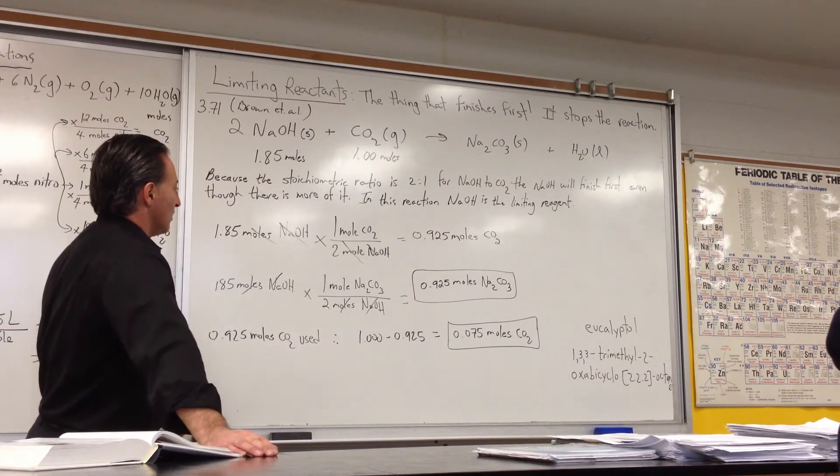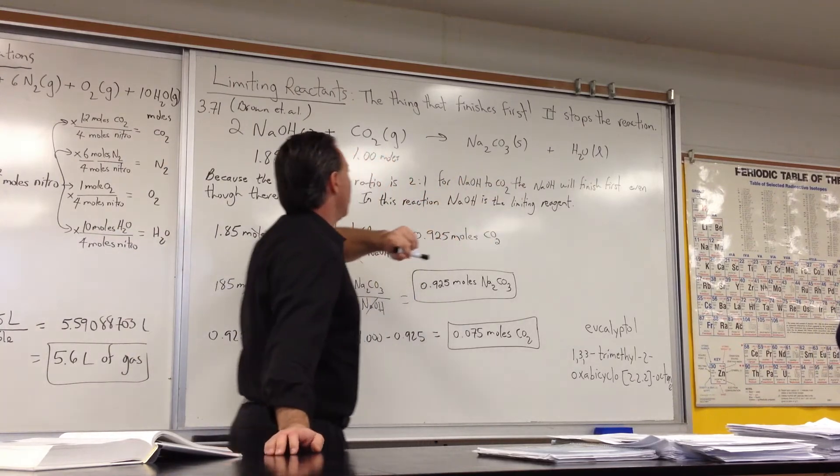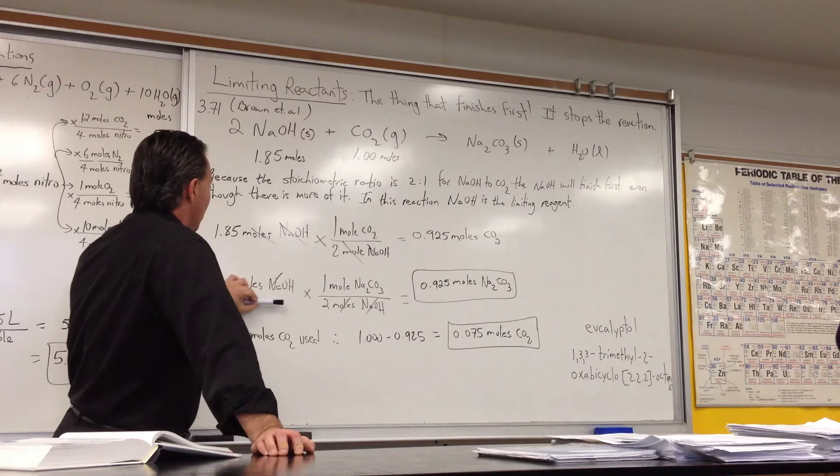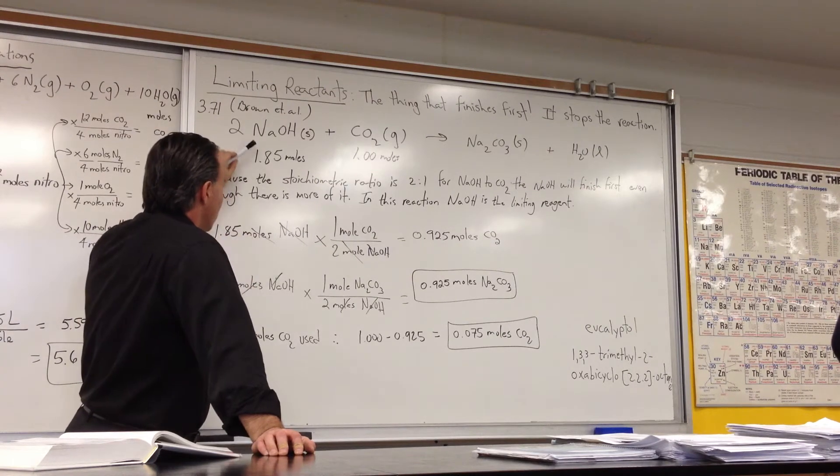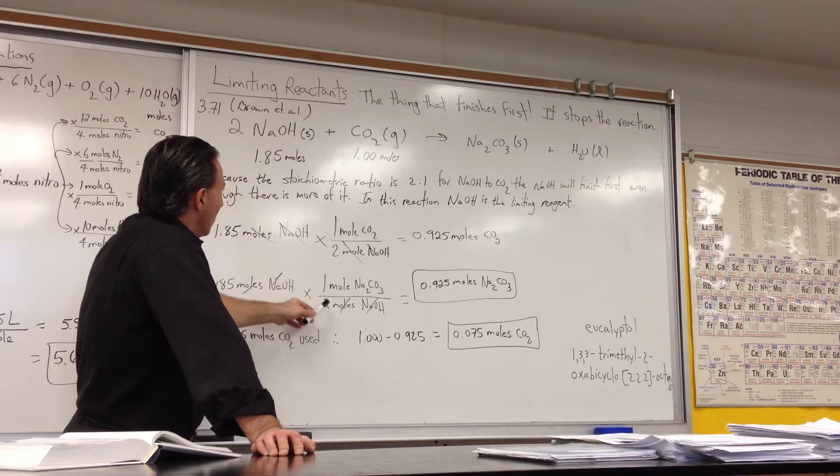In the next part of the question, it asks how much sodium carbonate is produced from this reaction. So we again start with the moles of NaOH, not the stoichiometry, but the moles of NaOH, times the stoichiometry. And in this case, it's 1 to 2.